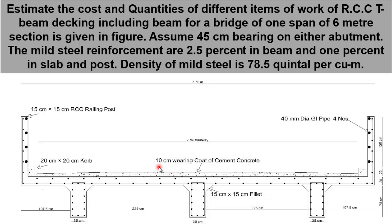On the slab deck, a 10 cm wearing coat of 1:2:4 cement concrete is provided. On each side of the roadway, 20 cm by 20 cm kerbs are provided. For safety purposes, on each side, an RCC concrete post is provided having cross-sectional dimensions of 15 cm by 15 cm and a height of 120 cm. As given in the statement, steel reinforcement is 2.5% in beam and 1% in slab and post. Four numbers of 40 mm dia GI pipes are also provided between the posts, which you can see in this cross-sectional diagram.